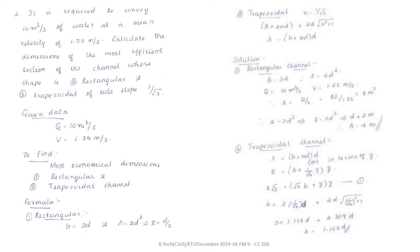Now we solve for the rectangular channel. We know the condition b = 2d and A = 2d². From Q = A × V, we get A = Q/V = 10/1.25 = 8 m². Substituting A = 2d², we get 8 = 2d², which gives us the depth d, and from that we can find the width b.